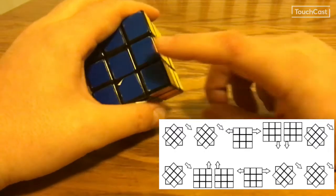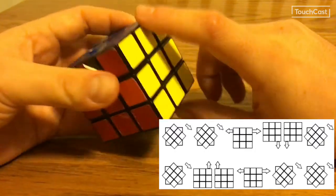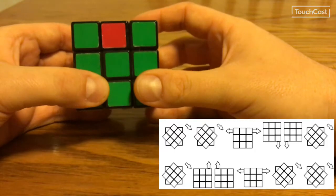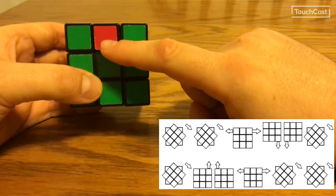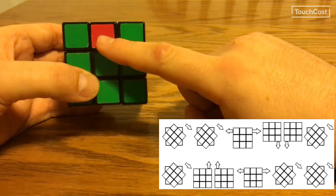If you have a solved side, that side should be facing away from you. This next step is important for step eight. I see that my piece that is wrong is red.